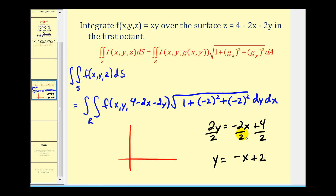So our x, y trace has a y-intercept of 2 and a slope of -1, passing through the point (2, 0). This x, y trace will help us determine the limits of integration for y and x.